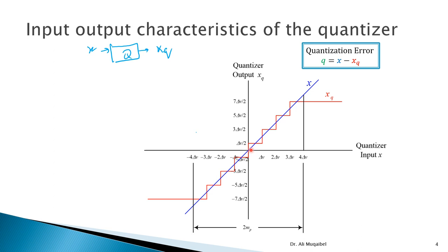That ideal case would be an infinite-bit quantizer with perfect quantization and no error. In real quantizers, anything beyond NP is saturated to the highest level; anything below the minimum is saturated to the minimum. Anything between 0 and delta-v is mapped to delta-v over 2; between delta-v and 2 delta-v is mapped to 3 delta-v over 2, and so on — always mapping to the middle value. This is the input-output characteristic of the quantizer.